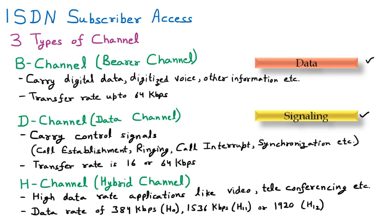In summary, there are three channels under ISDN subscriber access. The B channel (bearer channel) passes data such as digital voice and information at 64 kbps. The D channel (data channel) passes control signals for call establishment, ringing, call interrupt, and synchronization at 16 or 64 kbps. The H channel (hybrid channel) supports real-time applications like video and teleconferencing with variable high data rates.